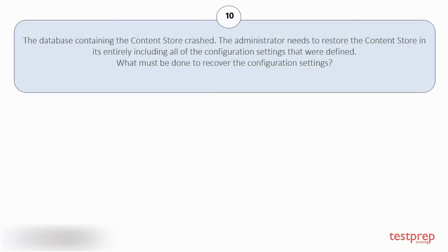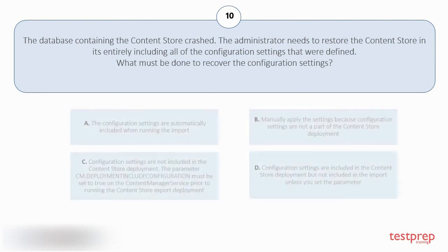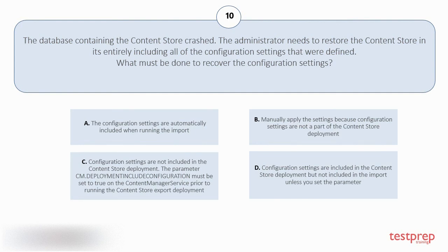Question number 10: the database containing the content store crashed. The administrator needs to restore the content store in its entirety including all of the configuration settings that were defined. What must be done to recover the configuration settings? Your options are: A. The configuration settings are automatically included when running the import. B. Manually apply the settings because configuration settings are not a part of the content store deployment. C. Configuration settings are not included in the content store deployment; the parameter must be set to true on the content manager service prior to running the content store export deployment.